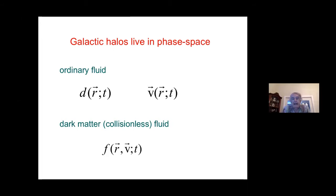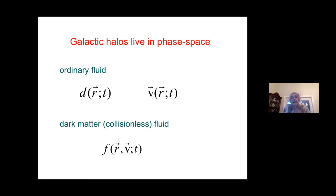To describe a collisionless fluid, you need a phase space distribution. For an ordinary fluid you have a physical space distribution — you give the density and velocity at any location and can evolve the fluid in time. For dark matter, you have to evolve it in phase space.